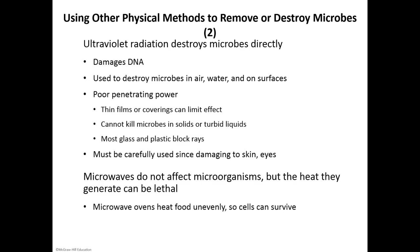Ultraviolet radiation does not go through glass or plastic in general — it's not very good at penetrating. You can utilize plastic or glass as a block for UV radiation. A lot of times we place plastic over something when we're radiating so that we don't get damage to our skin or our eyes.